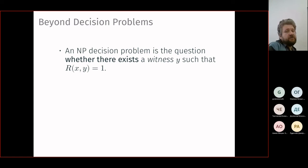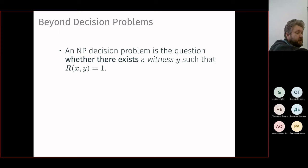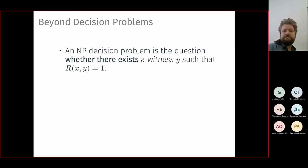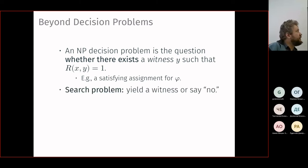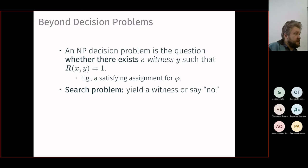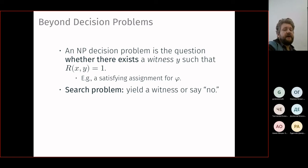Let's go beyond decision problems. An NP decision problem asks whether a polynomial-size witness exists. Examples: for satisfiability, the witness is the satisfying assignment; for graph colorability, the witness is the coloring; for independent set, the witness is the set itself. A more interesting variant is the search problem: if no witness exists, answer no; but if a witness exists, produce at least one. Your first homework already asked this — not just satisfiable or not, but also provide the satisfying assignment.